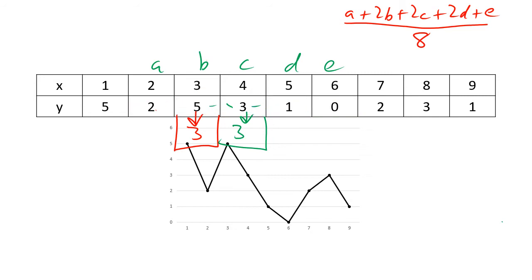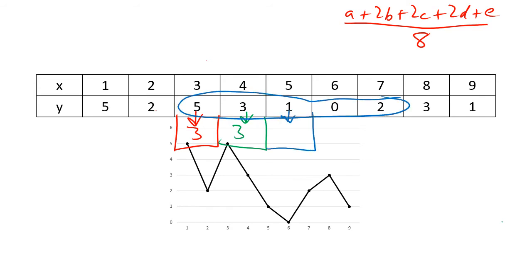Now the blue loop: the five numbers are centered here, and it's 5 + (2×3) + (2×1) + (2×0) + 2. Add them all up and divide by 8 — remember it's always a, b, c, d, e moving along one — and you get about 2. If you keep repeating this process, you'll probably go a bit crazy to be honest.